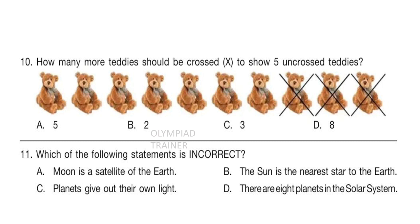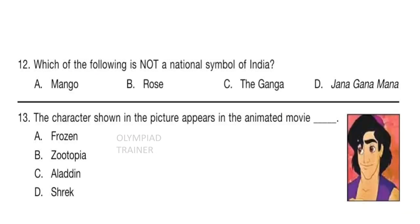Question 11: Which of the following statements is incorrect? A — Moon is the satellite of the Earth. B — The sun is the nearest star to the Earth. C — Planets give out their own light. D — There are 8 planets in the solar system. Option C is the incorrect statement, so option C is the answer. Question 12: Which of the following is not a national symbol of India? Answer is option B — Rose. The national flower of India is lotus, not rose.